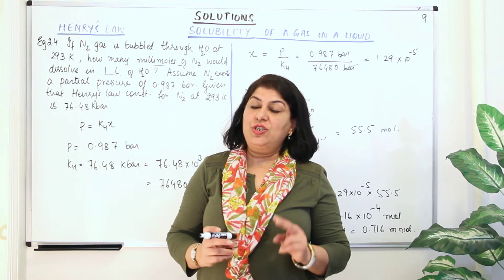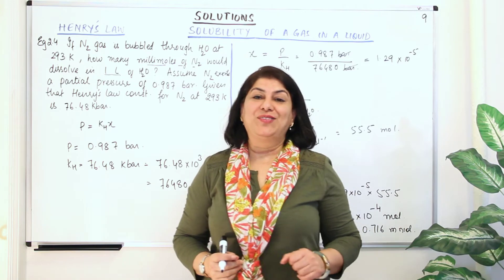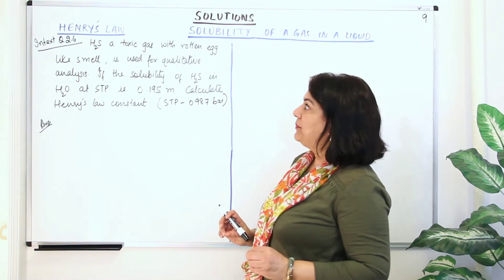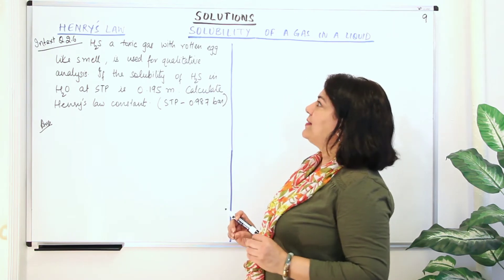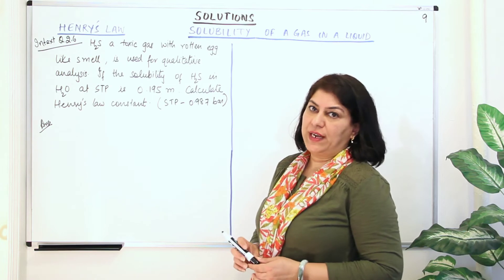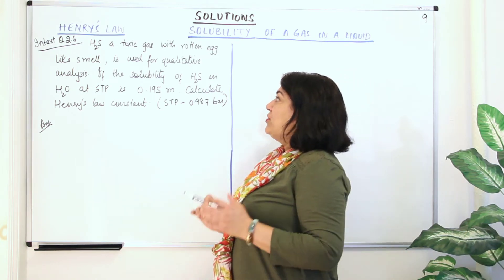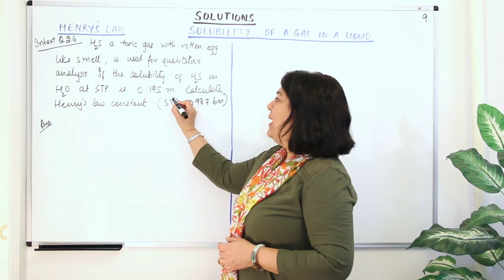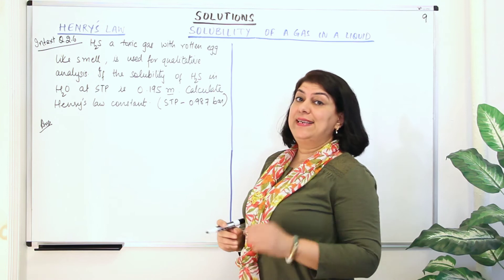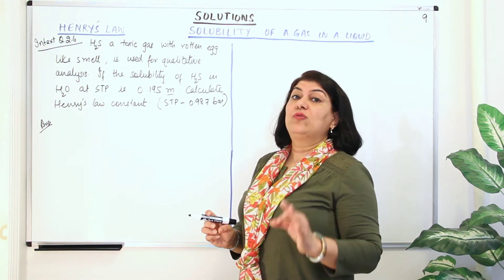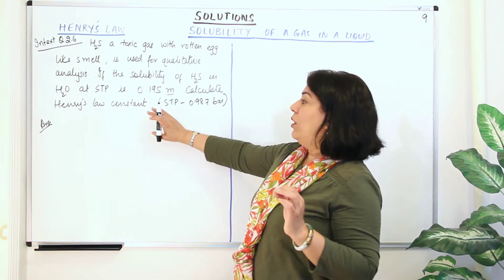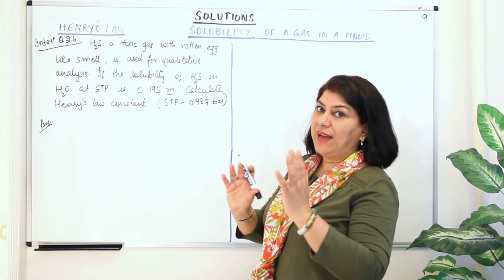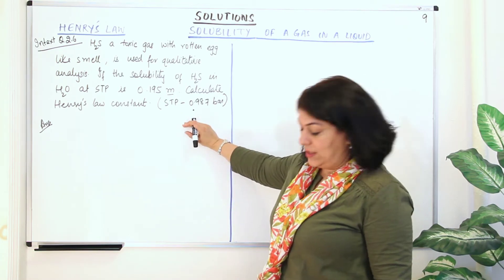Now I'm going to do the two in-text questions on this topic. This is in-text question 2.6. The question reads: H₂S is a toxic gas with a rotten egg-like smell and is used for qualitative analysis. If the solubility of H₂S in water at STP is 0.195 m — small m means molality, that is the number of moles of solute in 1000 grams of solvent — calculate the Henry's Law constant.